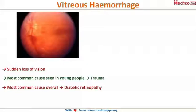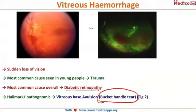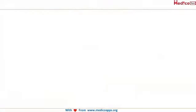Vitreous hemorrhage presents with sudden loss of vision and is most commonly seen in young males because they are more susceptible to trauma. However, the overall most common cause of vitreous hemorrhage is diabetic retinopathy. The hallmark or pathognomonic feature of vitreous hemorrhage is vitreous base avulsion, famously known as the bucket handle tear, which is the diagnostic feature.